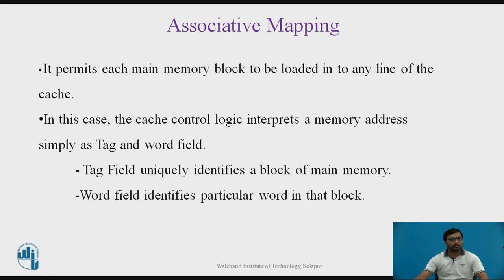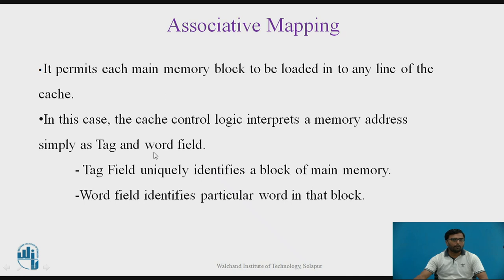In this technique, the cache control logic interprets a memory address simply as a tag and word field. Recalling the address format of direct mapping, there were three fields: the offset field to identify a particular word in the block, the R (cache line) field to identify which cache line a block maps to, and the remaining MSB bits (R minus S bits) to identify which block of main memory is present in cache. But in associative mapping, we don't need to worry about the cache line field — only two fields are required: word field and tag field.